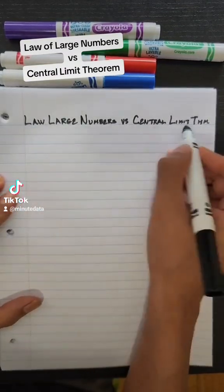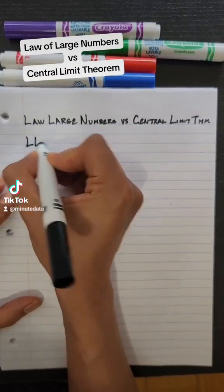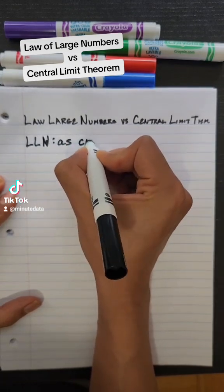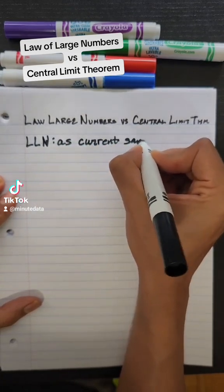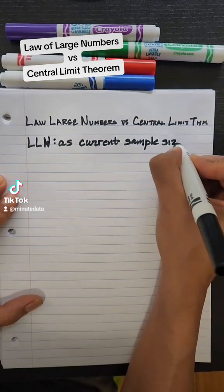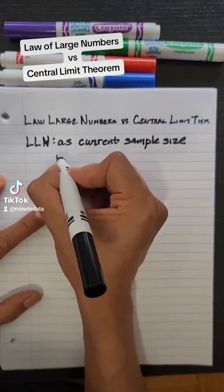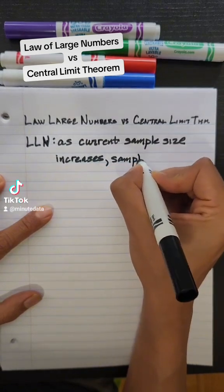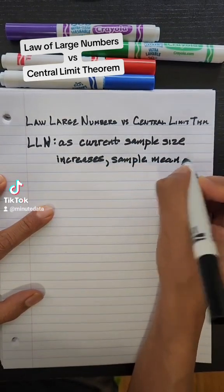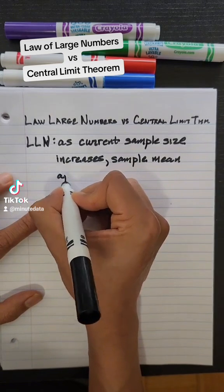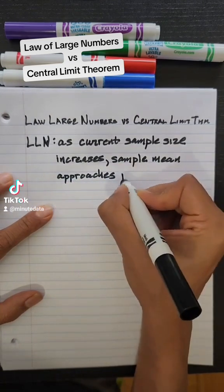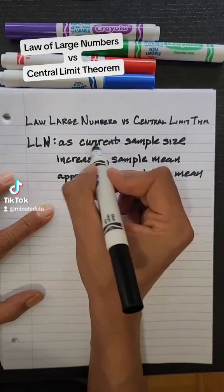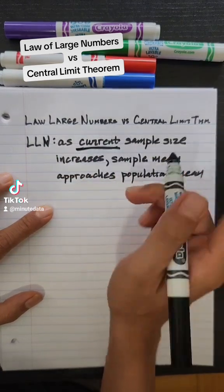Quick video on the difference between Law of Large Numbers versus Central Limit theorem. Law of Large Numbers: as the current sample size increases, the sample mean approaches the population mean. The emphasis here should be on the current sample, i.e. one sample.